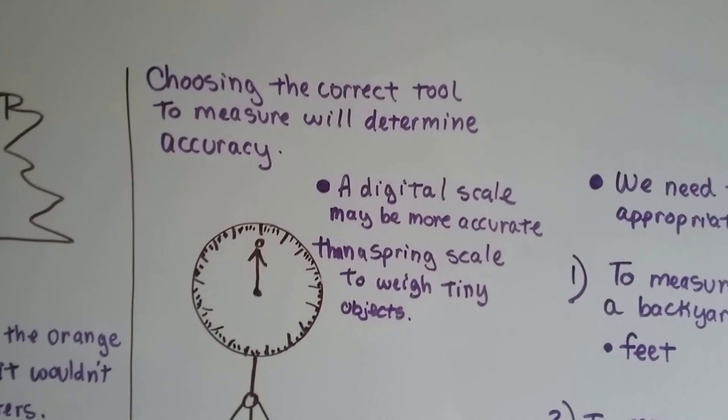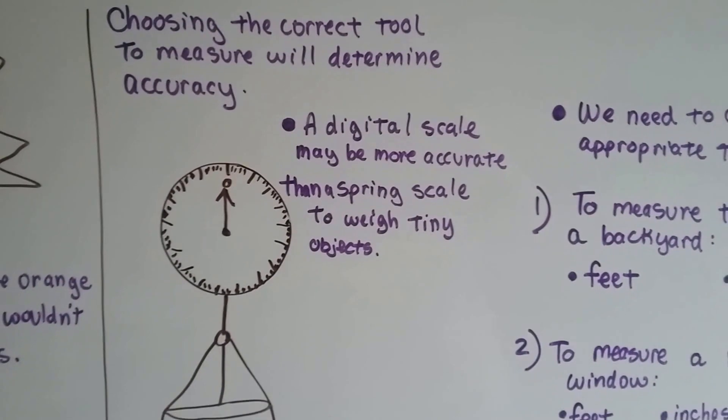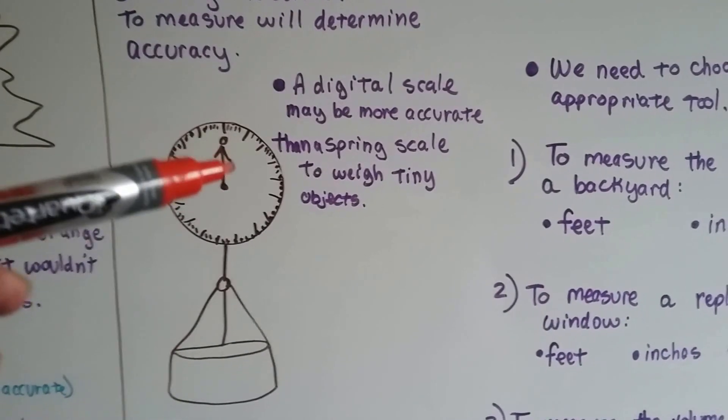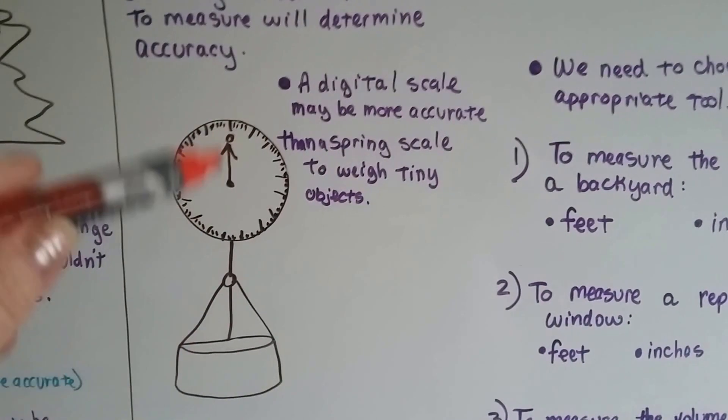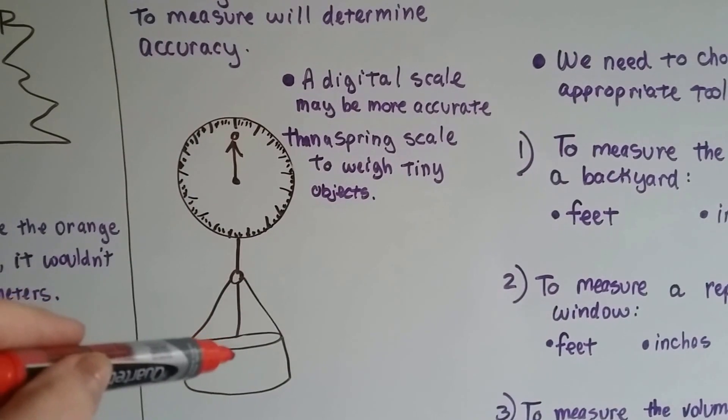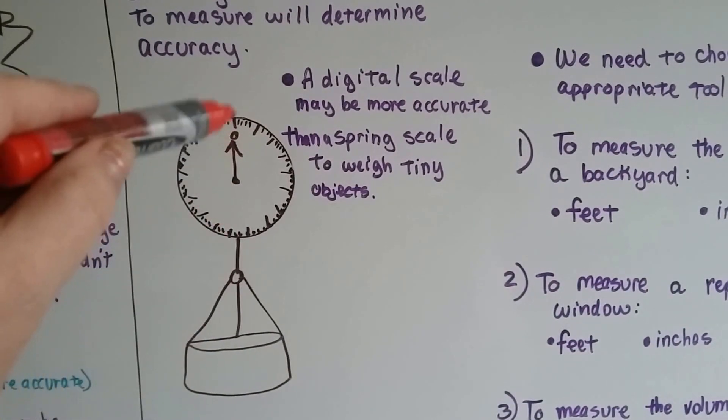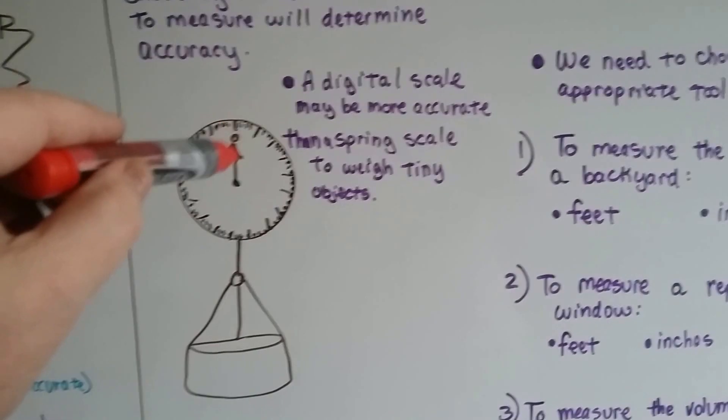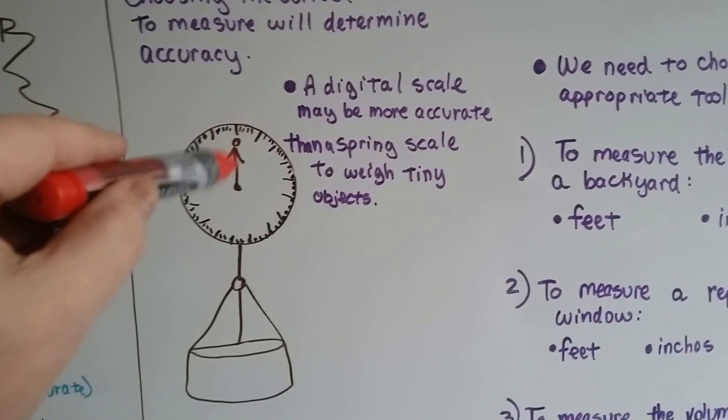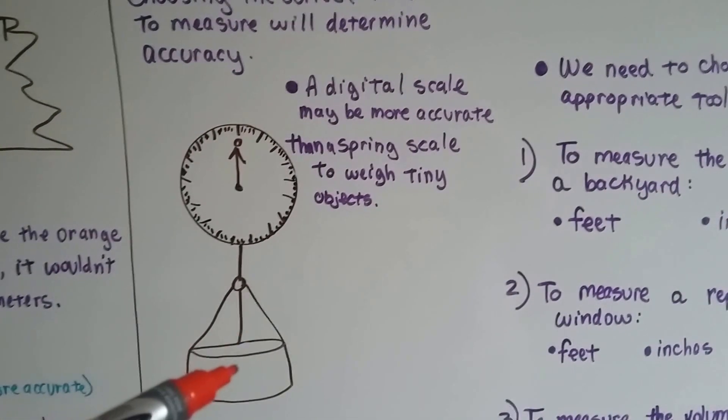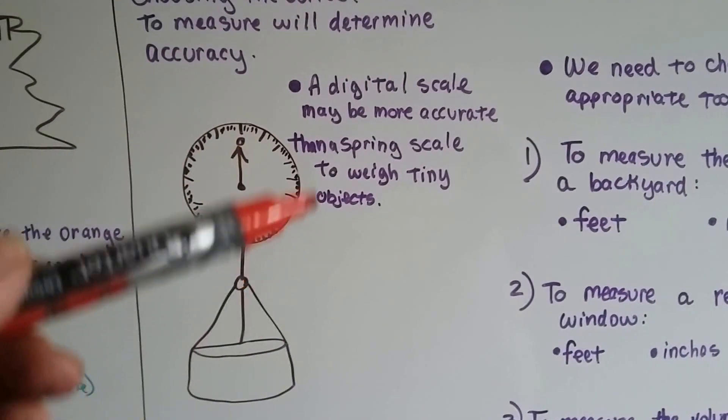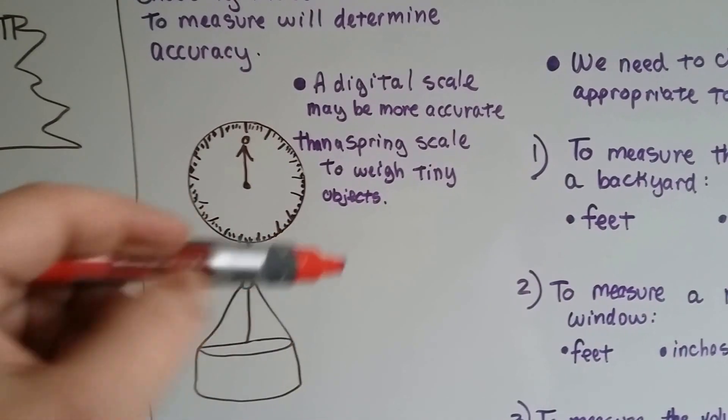Choosing the correct tool to measure will determine your accuracy. A digital scale may be more accurate than a spring scale. If I wanted to weigh five grapes, the spring scale may not even move the arrow. But if I put it on a very sensitive digital scale, I might be able to weigh five little separate grapes.